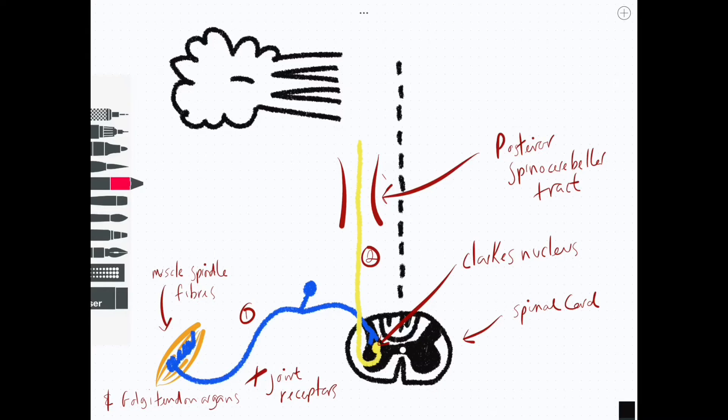For information coming in above C8, I will mention that later—that's slightly more complicated. But for now that's enough, and we can say that the second order neuron then leaves the spinal cord, ascends up in the posterior spinocerebellar tract ipsilaterally—that's the yellow one here—and it will go into the cerebellum. Three routes into the cerebellum of course: the superior, the middle, and the inferior peduncles. This information is going to travel into the cerebellum via the inferior cerebellar peduncle.